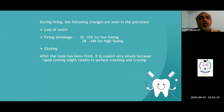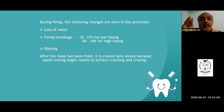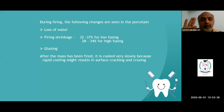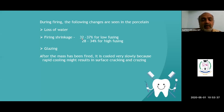During firing, changes occur: first there is loss of water — the water comes from the liquid component used to mix the ceramic powder. Ceramic is classified according to firing temperature as high fusing, medium fusing, low fusing, and ultra-low fusing ceramic, each with its own firing temperature. At low fusing temperature, about 32 to 37 percent shrinkage occurs.